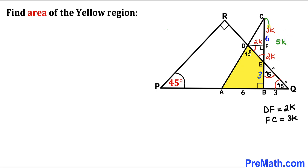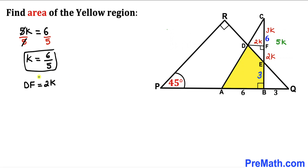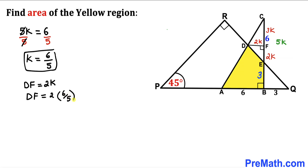We know that CE is 6 centimeters, so 5k = 6, giving k = 6/5. Since DF = 2k, we get DF = 2 × (6/5) = 12/5 centimeters.